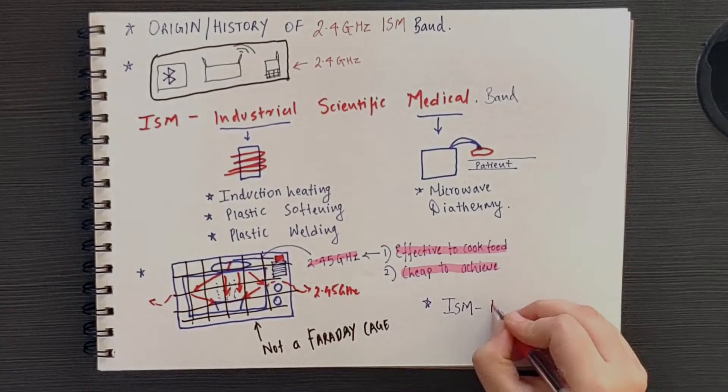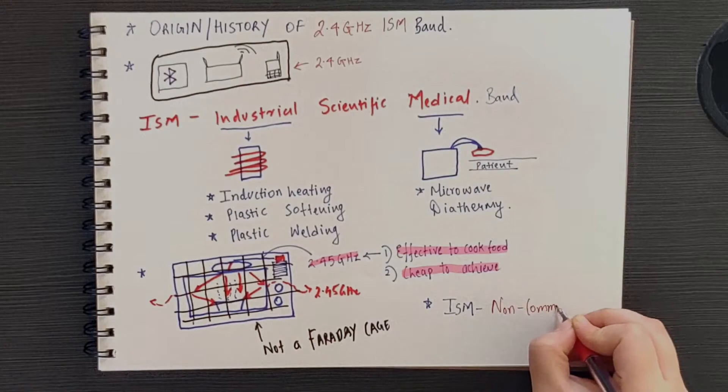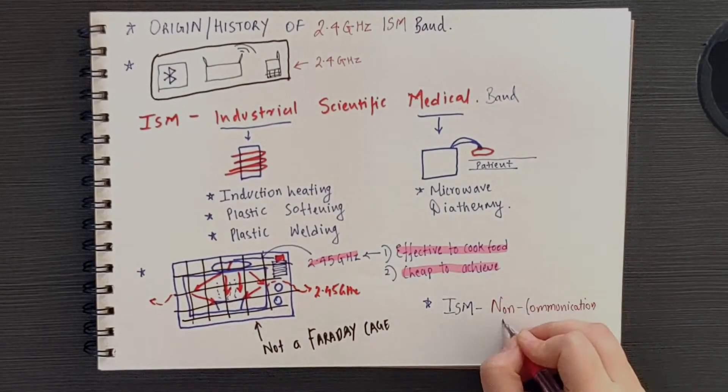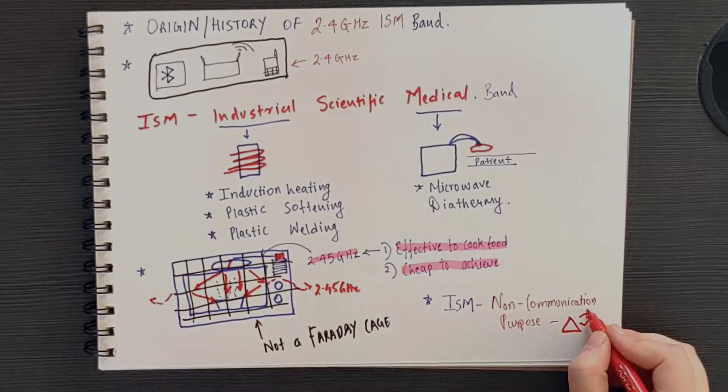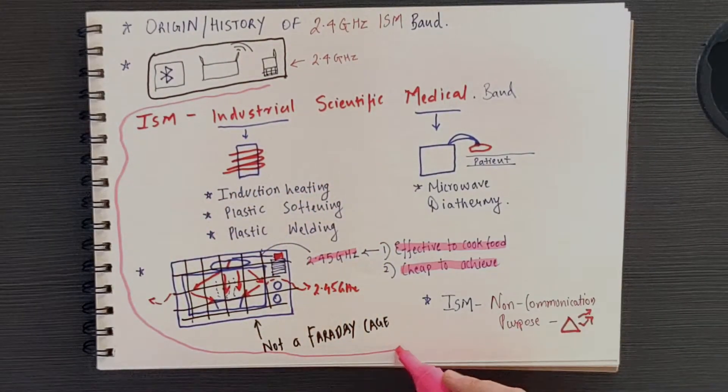Thus, the original ISM specifications envisioned that the ISM bands would be primarily used for non-communication purposes such as heating as we just discussed.